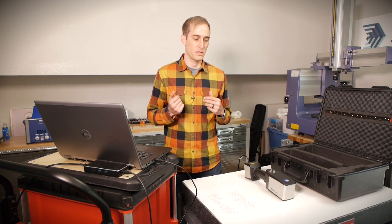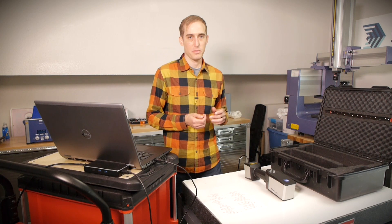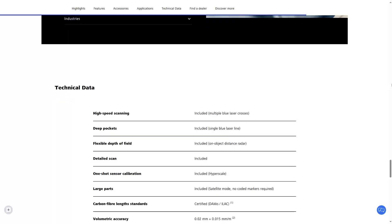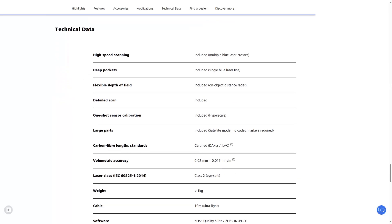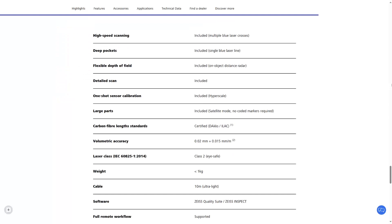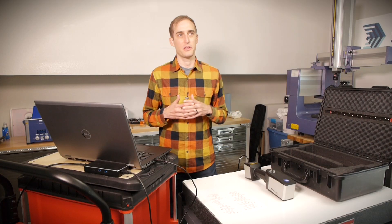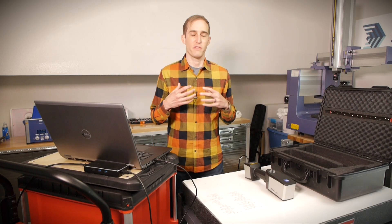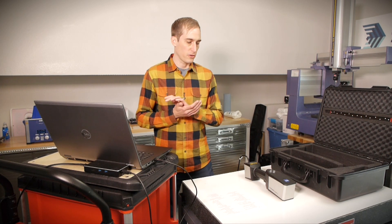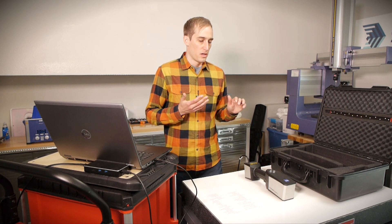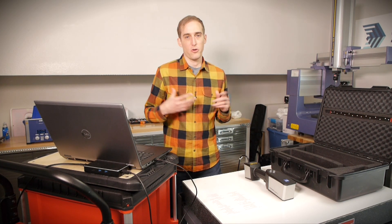So one of the things that was kind of new for me is understanding its accuracy capabilities. Zeiss does list an accuracy spec for this thing, which I was excited to see because typically Zeiss doesn't list accuracies for their structured light 3D scanners. But then I also had to go through kind of a paradigm shift myself learning about how this thing's lasers will interact with some surfaces.